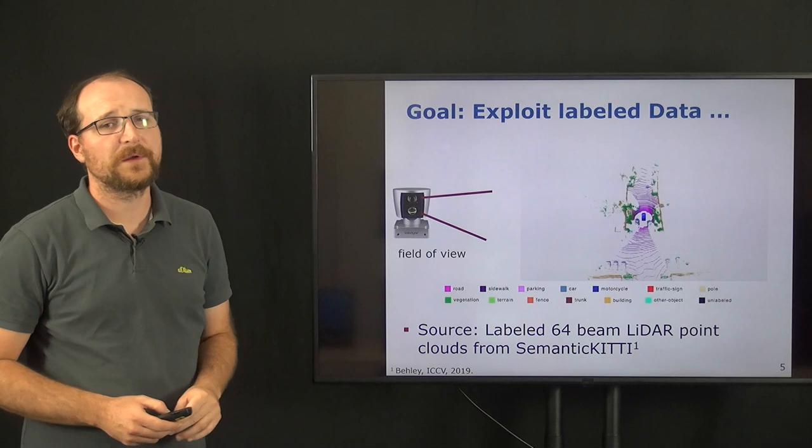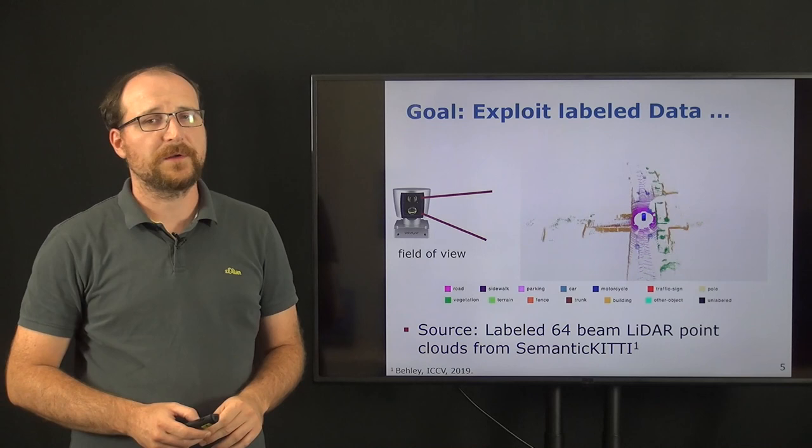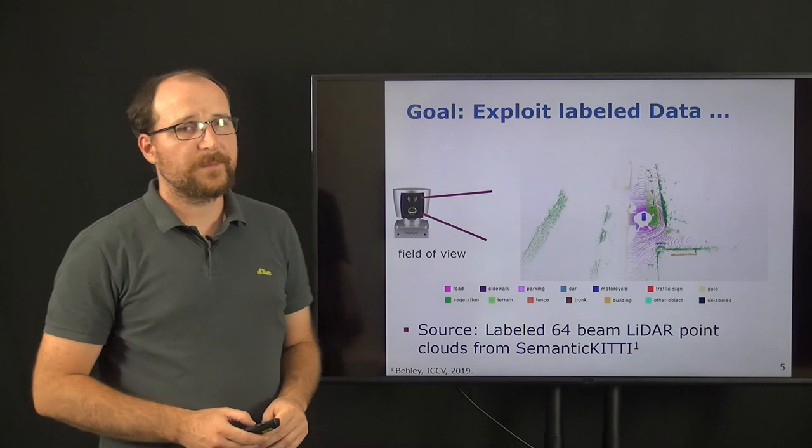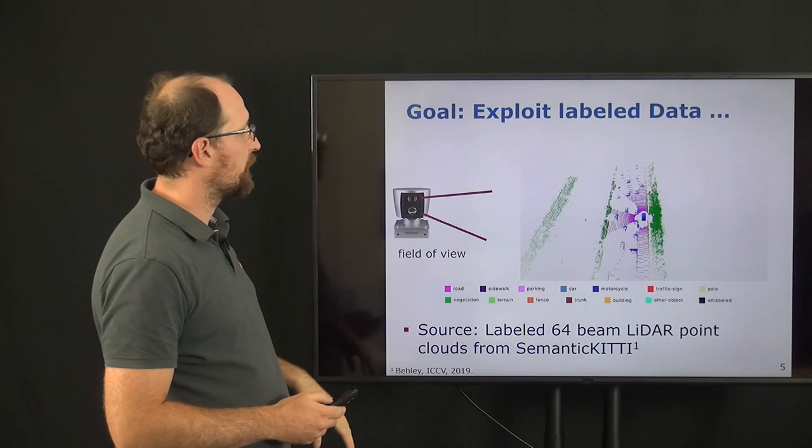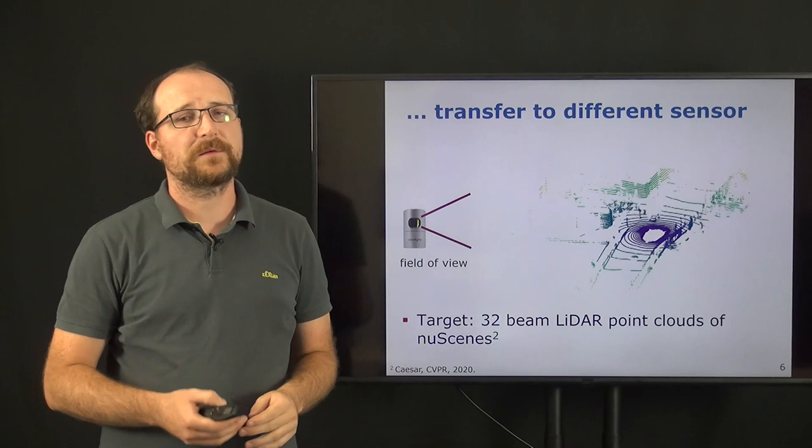The goal is to exploit labeled data. For this purpose, we are using here the so-called semantic KITTI dataset, which was labeled for the KITTI Odometry Data Benchmark and provides over 20,000 labeled scans. As shown here, the KITTI dataset was recorded with a Velodyne 64, which has the following field of view.